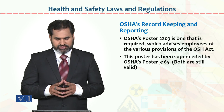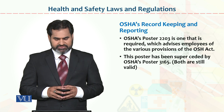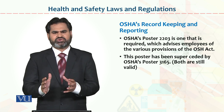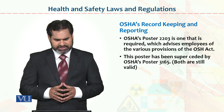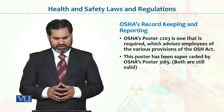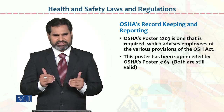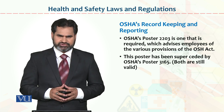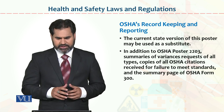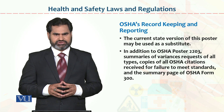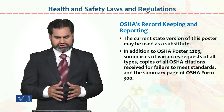OSHA Poster 2203 is required, which advises employees of the various provisions of the Occupational Safety and Health Act. In record keeping, we maintain records of employees' health standards, liabilities, and responsibilities. This poster has been superseded by OSHA Poster 3165, but both are still valid. The 3165 poster is more commonly used as it is more comprehensive, though the earlier one also contains all the information.